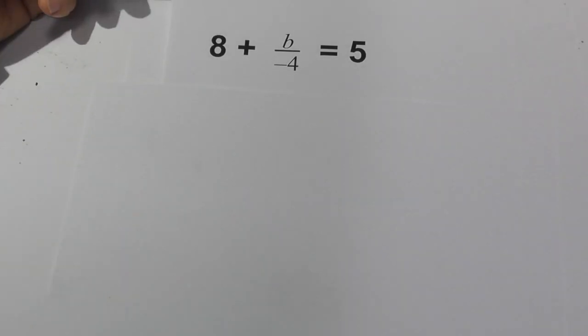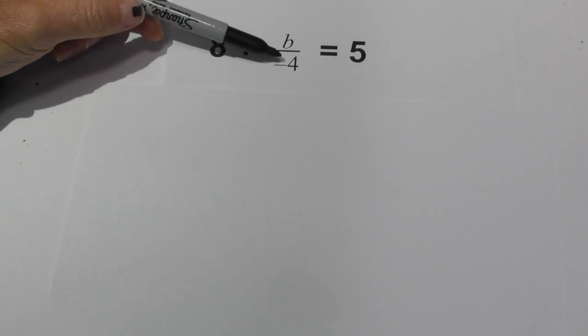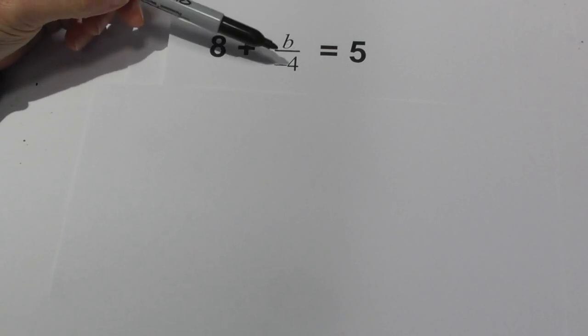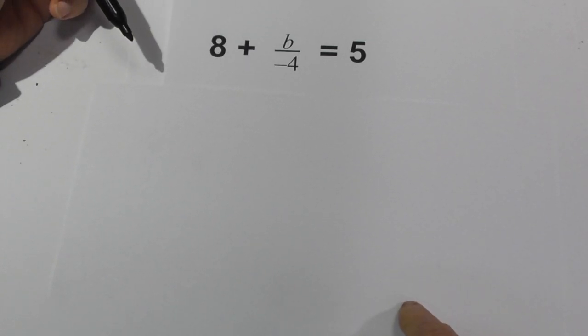Welcome to MooMoo math and science. In this video let's solve 8 plus b over negative 4 equals 5. This has a couple things going on - it has a fraction and a negative number. So let's get started.